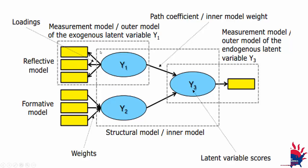This is a model drawn in Smart PLS that we will work on later. The blue ovals are your constructs — your main variables. The arrows between these blue ovals represent your hypotheses, and together they form the structural model. The yellow rectangles are the items — the questions in your questionnaire that people answer. The blue oval is measured through the data from those yellow rectangles, and this is what we call the measurement model. The numbers on the arrows from items to constructs are called loadings; the numbers on the paths between constructs are called path coefficients.